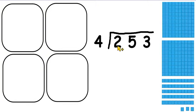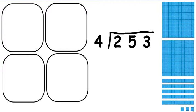I've got 253 divided by 4. So using Deans I've made the number 253. You can see 200s, 5 tens and 3 units.